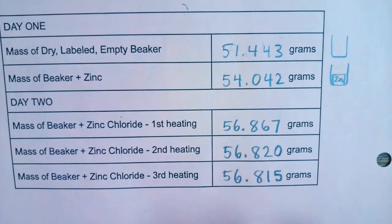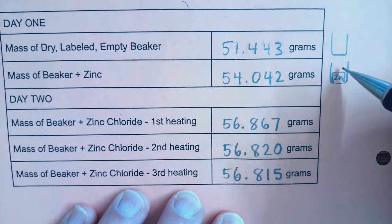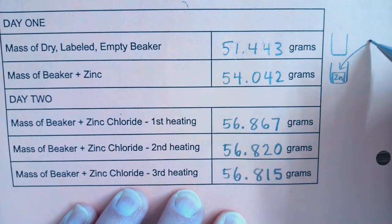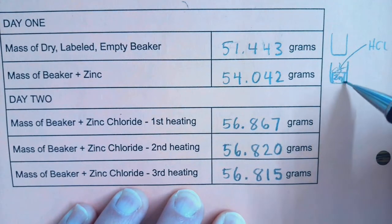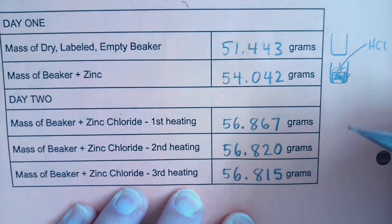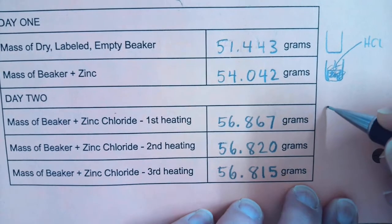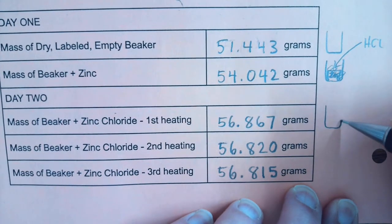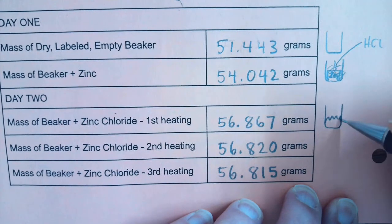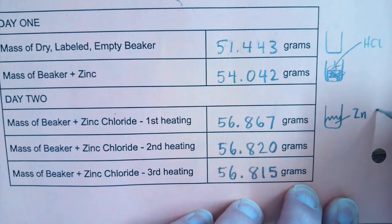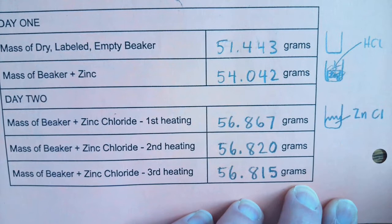Alright back to my data. So what did I do on day two? I ran the reaction. I put some HCl hydrochloric acid in with the zinc, it bubbled away and reacted and it changed into zinc chloride. So now my empty beaker has some stuff in it and that stuff is some zinc atoms and some chlorine atoms that have come together in some particular ratio.